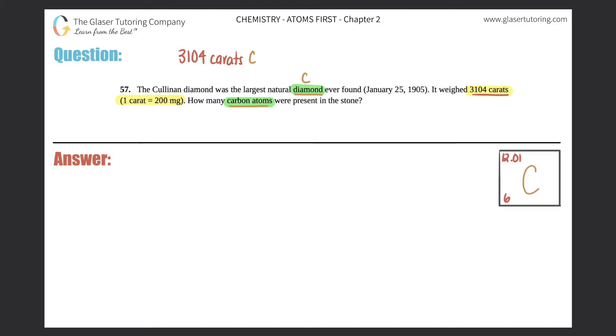At the end we want to get to atoms of carbon. They gave us a conversion factor: one carat equals 200 milligrams, so I can convert from carats to milligrams. But how do I get from milligrams to atoms? Whenever we go to atoms, we usually come from moles, and moles comes from grams. So we go to grams of carbon, then to moles of carbon, then finally to atoms. This is a four-step process, but we'll do it all in one shot.